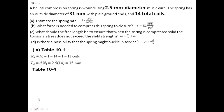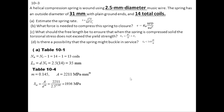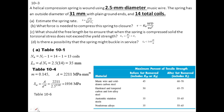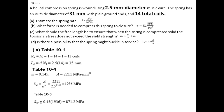Now we find the ultimate tensile strength: Sut = A / d^m. The constants A and m are taken from Table 10.4. For music wire with diameter between 0.1 and 6.5 mm, A = 2211 and m = 0.145. This gives Sut = 1936 MPa. From Table 10.6, the torsional yield strength before set removal is 45% of Sut, so Ssy = 0.45 × 1936 = 871.2 MPa.